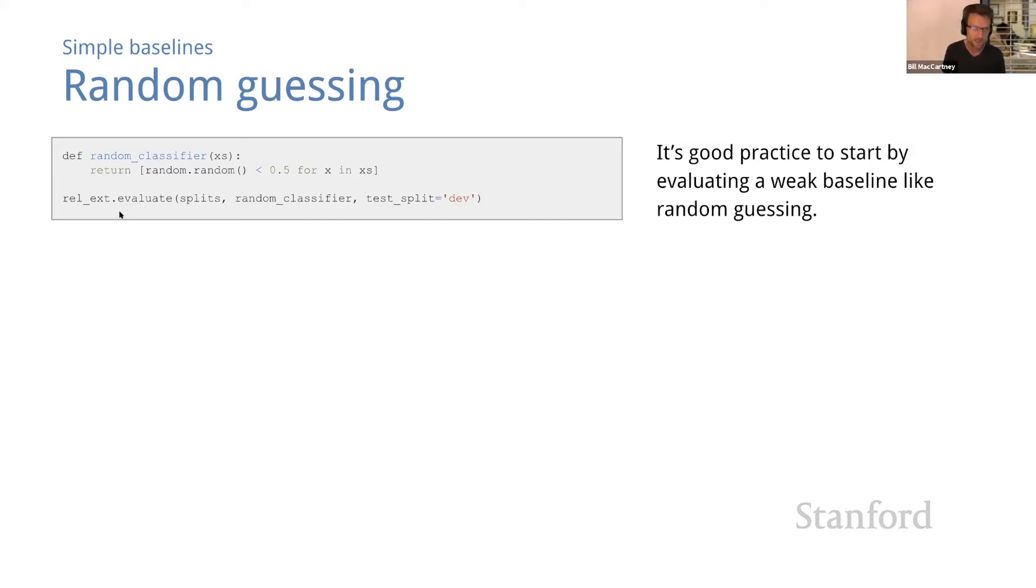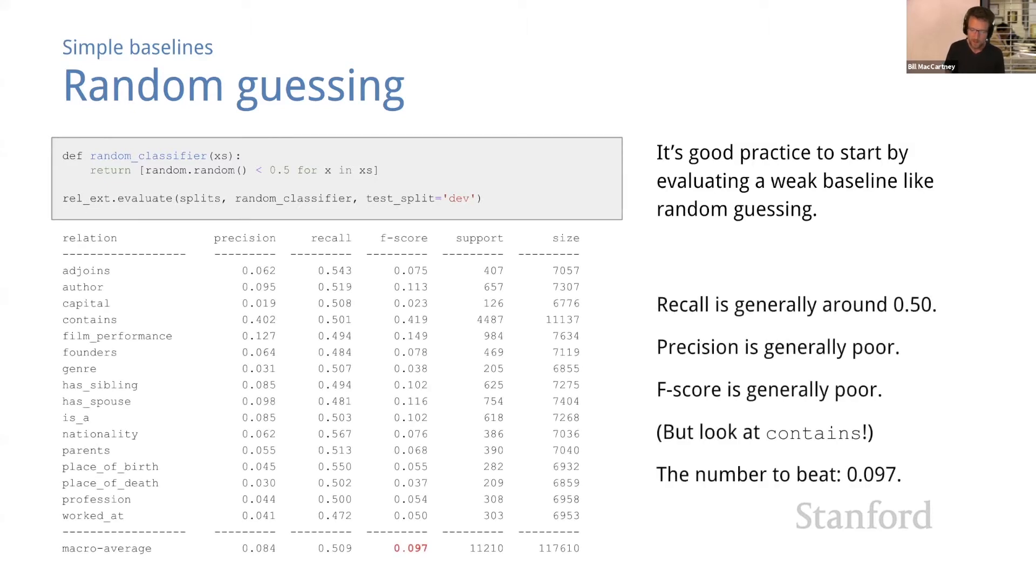We've written an evaluation method for you. It's in the relics module and it's just called evaluate. You invoke it with your splits, your classifier and the name of the split that you want to evaluate on, which defaults to dev. When we evaluate our random guesser we have some interesting results. We have results separated for each of the relations.